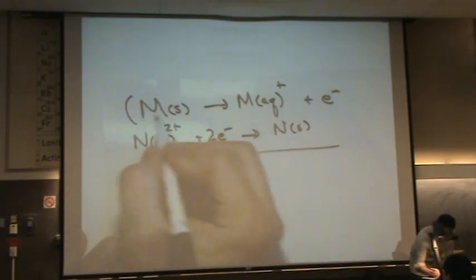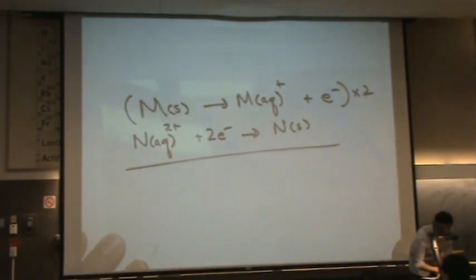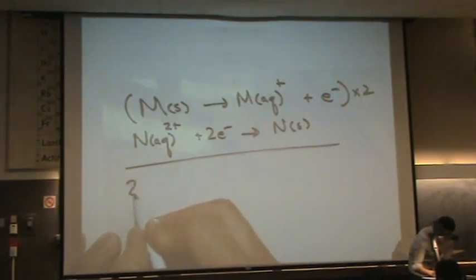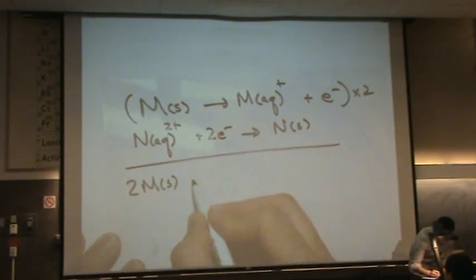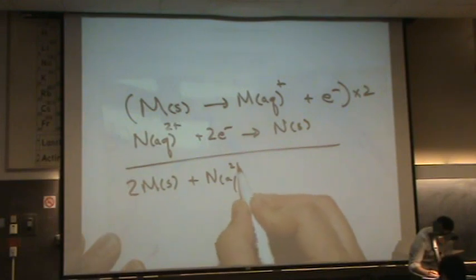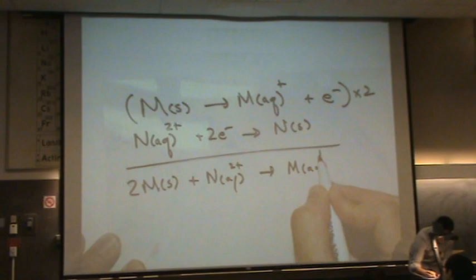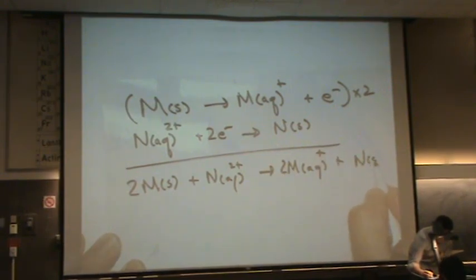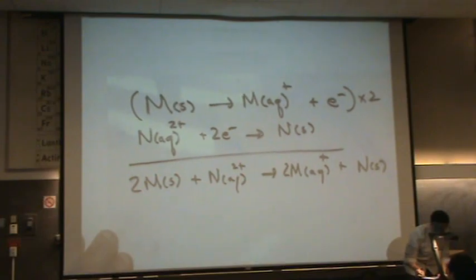So if we were balancing this, I'd multiply the top reaction by two, and we'd get two metal solids plus N aqueous two plus goes to the M aqueous, oh there's two of those, plus N solid. Let's say we have that reaction.